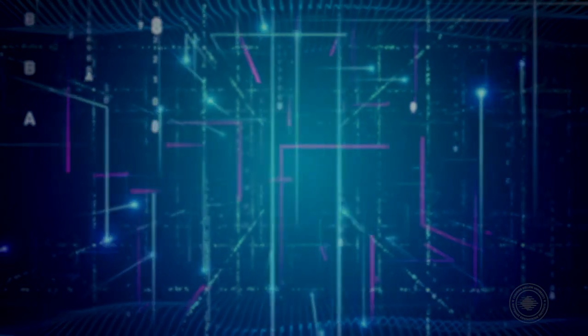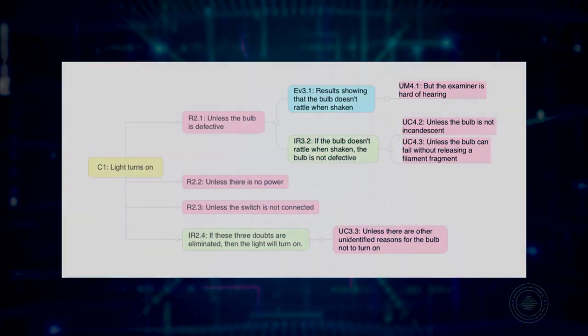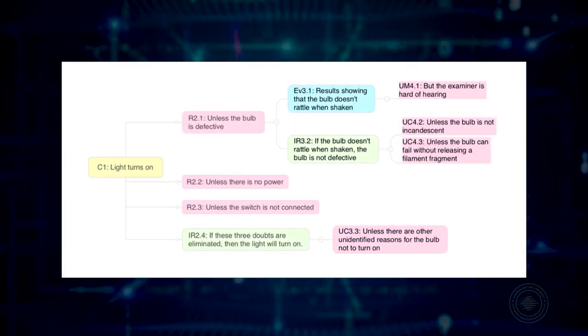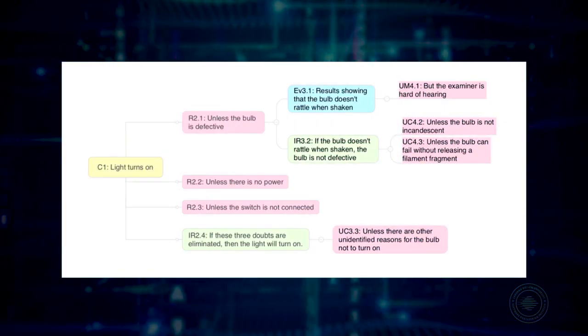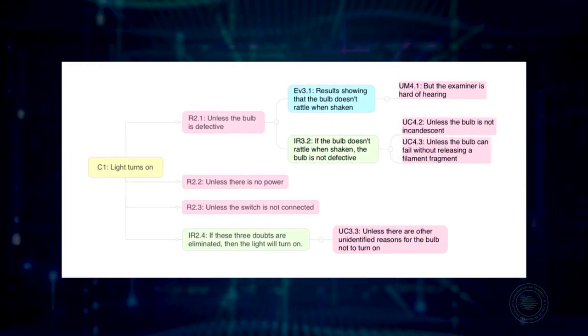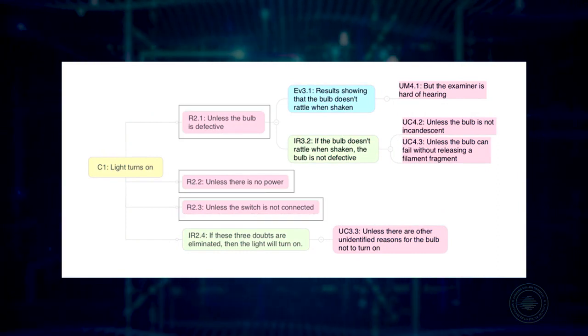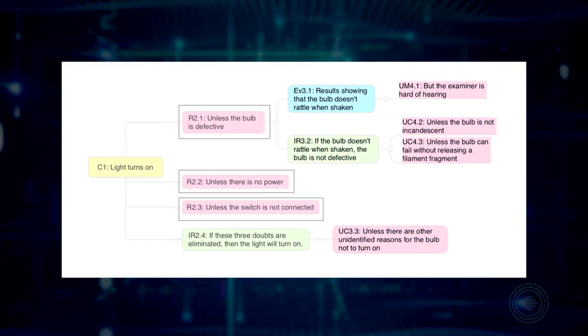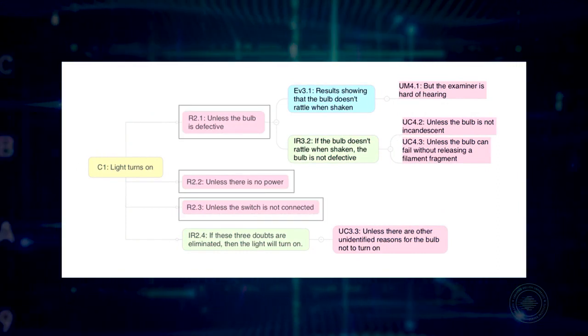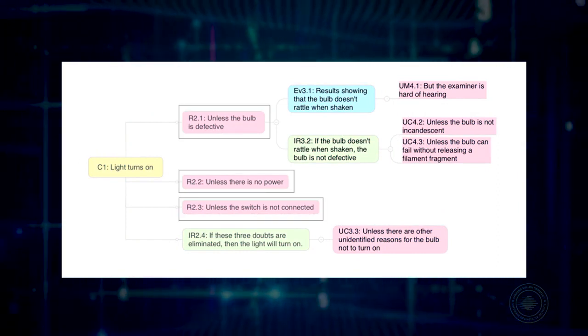Here's a confidence map expanding on our light bulb example. The seven identified doubts are in pink. There are three types: doubts about claims — for example, the bulb might be defective.